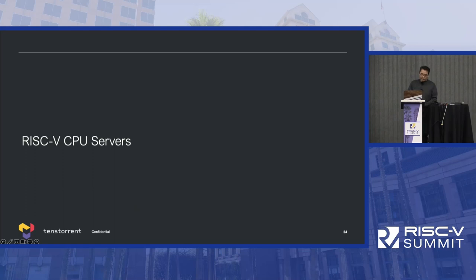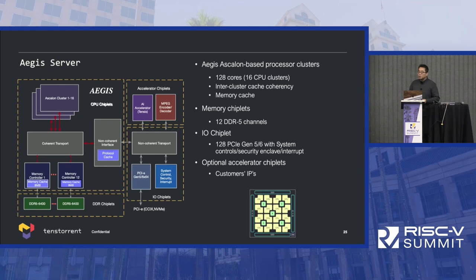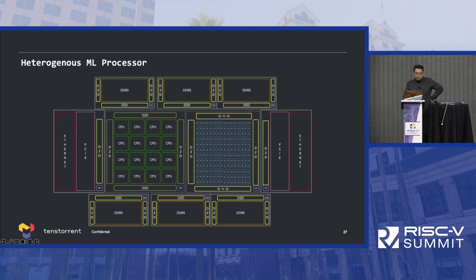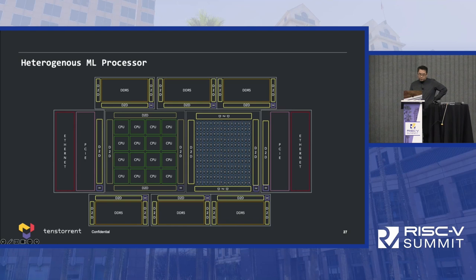Our EGIS chiplet can also be used as a server. Each server uses 128 cores coupled with memory chiplets and PCIe or I/O chiplets, composed together to form a high-performance server. You can optionally connect it to an AI accelerator or to an MPEG decoder for video services. We like chiplets because of strong design reuse and composability, giving flexibility to compose any system. For example, an EGIS system with 128 cores, our machine learning accelerator, 12 DDR channels, and I/O — that's the EGIS server: 128 cores with 6 DDR chiplets and 2 I/O chiplets. And if you need high-performance memory, you can go with HBM.